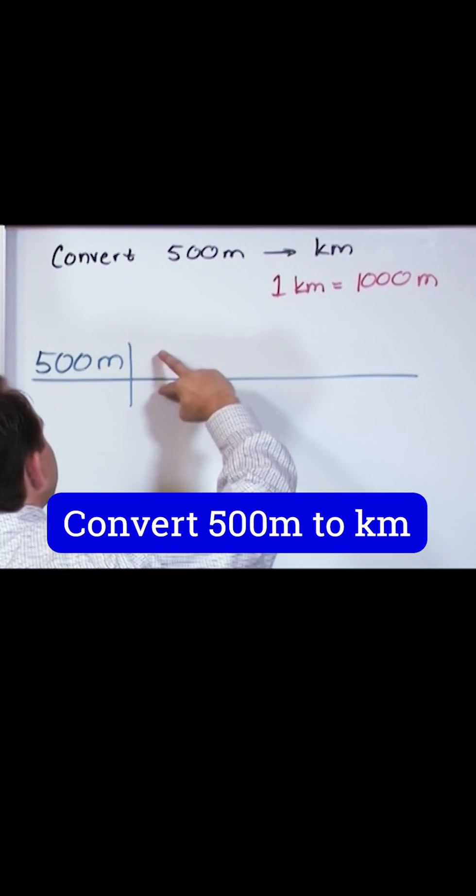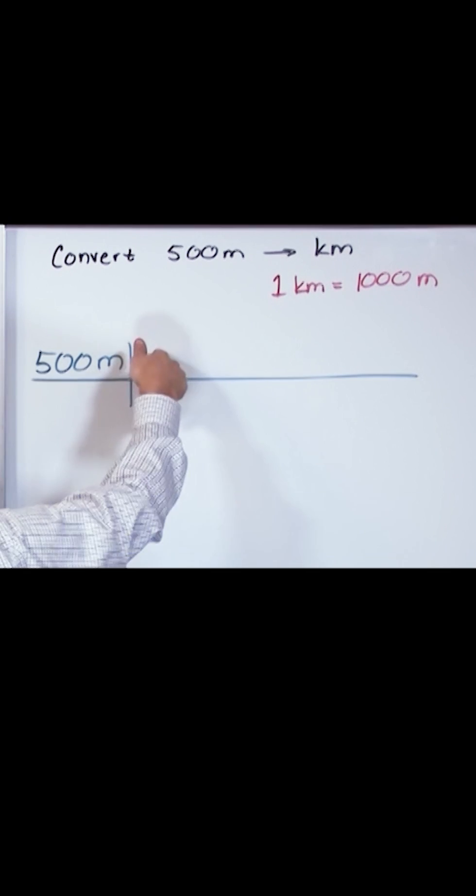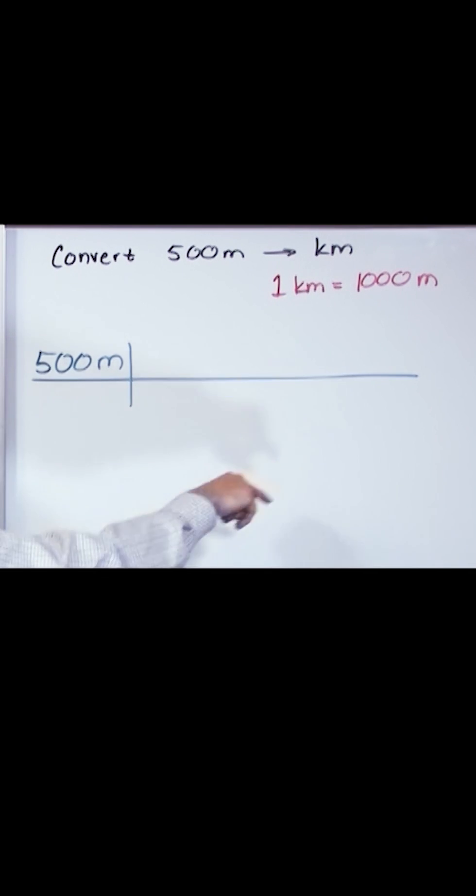The next thing you want to do is write your conversion factor that you have right here. This is sort of like a fraction bar, a giant fraction bar. What we know is that one kilometer is equal to 1,000 meters.